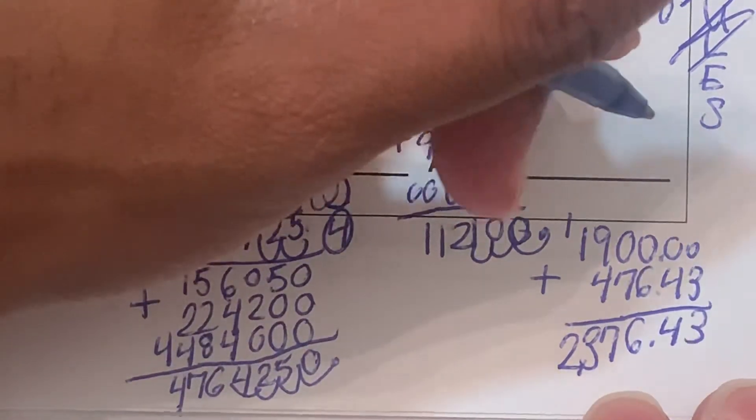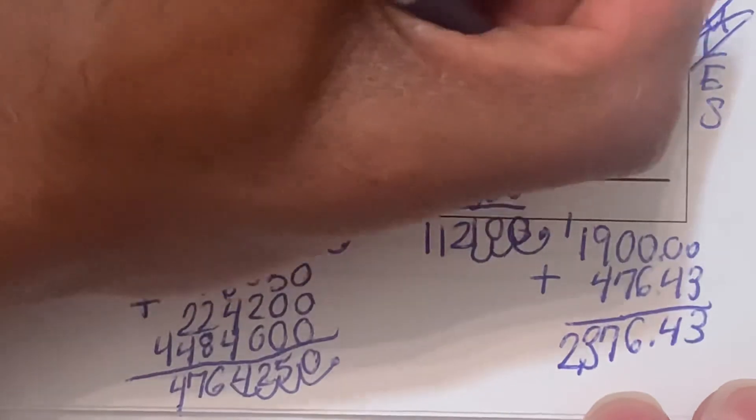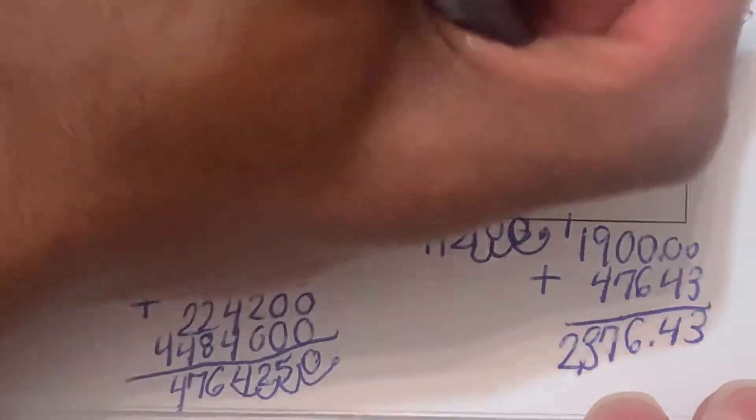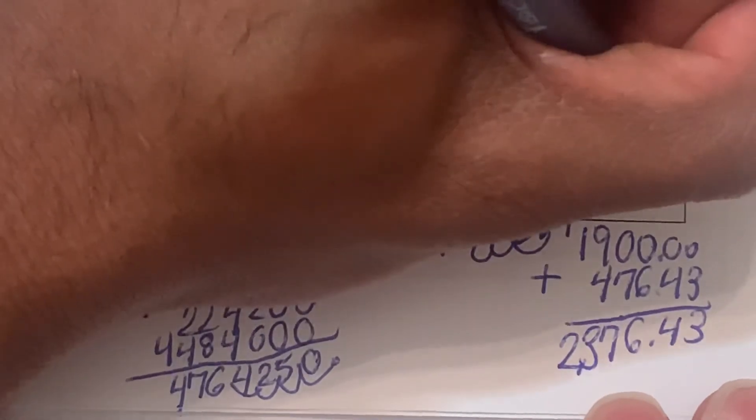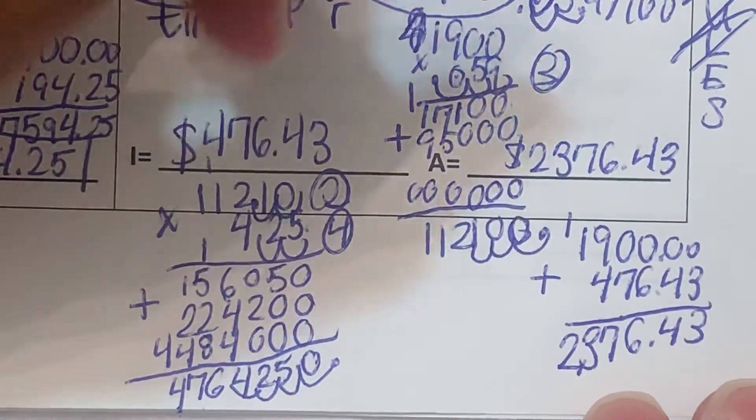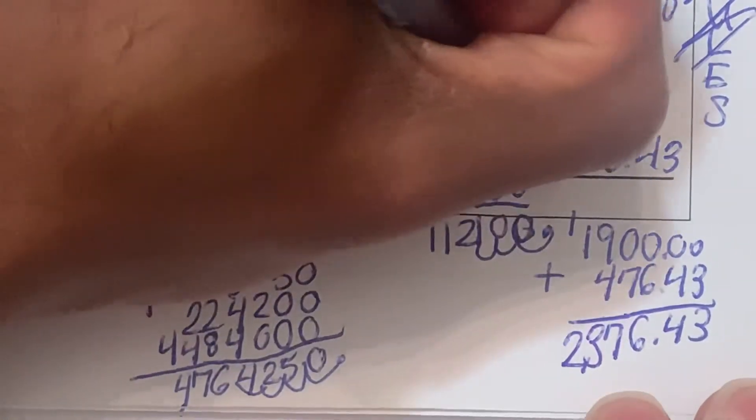3, 4, 6, 7, 9 plus 4 is 13. $2,376 and 43 cents. So we got our interest and then we have our total amount.